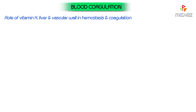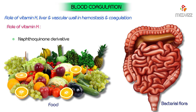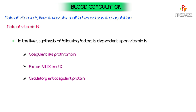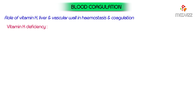Role of vitamin K: vitamin K is a complex naphthoquinone derivative obtained from food as well as synthesized by bacterial flora in the gut. In the liver, synthesis of the following factors is dependent upon vitamin K: coagulants like prothrombin, factors 7, 9, and 10, and circulatory anticoagulant protein C.